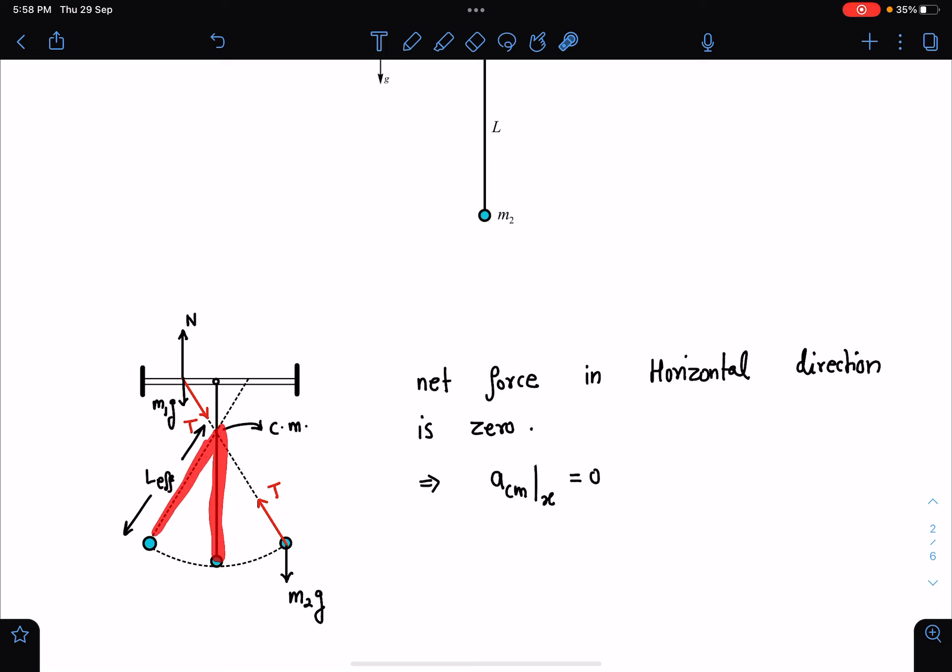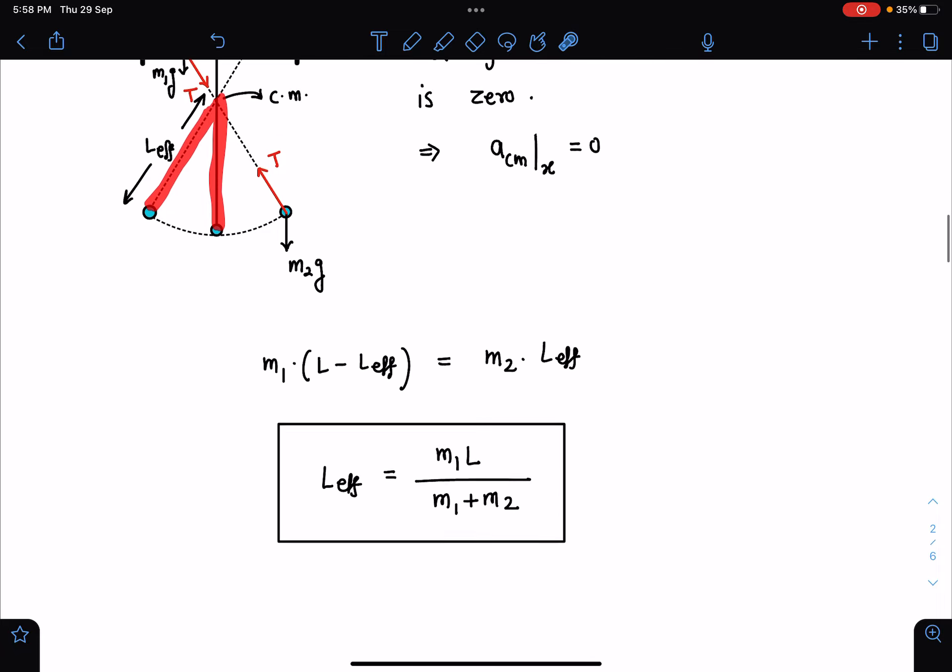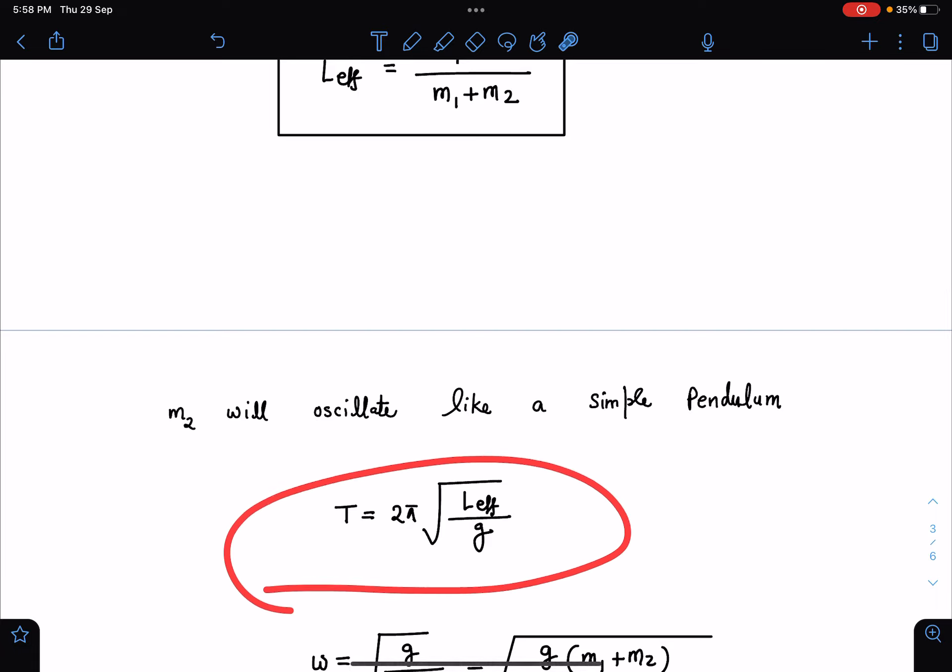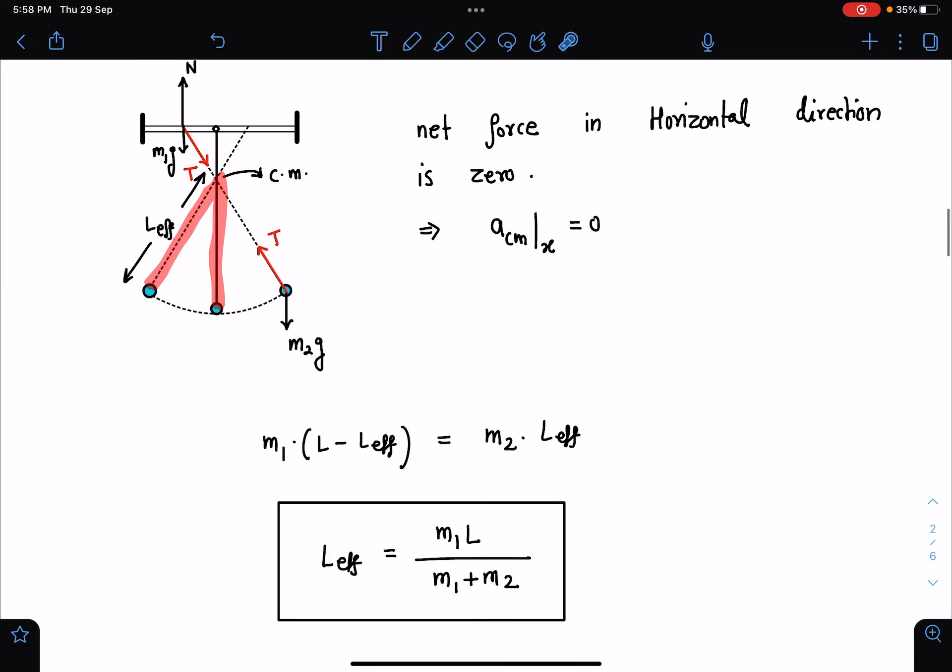Let's call this as L effective. If this is L effective, we can calculate this L effective and directly I can write here the time period of oscillation will be 2π root of L effective by G. How do we calculate this?